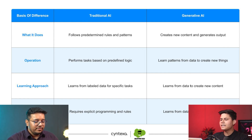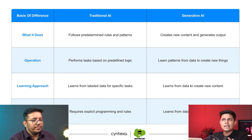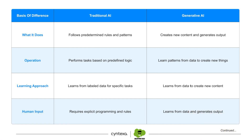Let's talk about the differences between traditional AI and generative AI based on two reference points. Traditional AI follows predetermined rules and patterns. Generative AI creates new content and generates output that looks like it was created by a very knowledgeable, intelligent human. For example, if you ask a graphic designer to create a logo for your new business, an AI can do that — and the kind of AI that will create that logo is going to be generative AI.